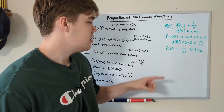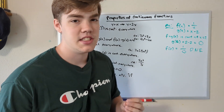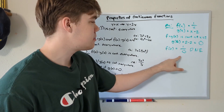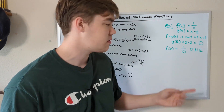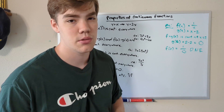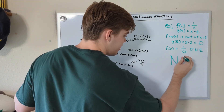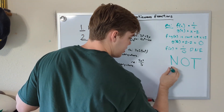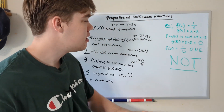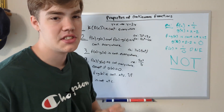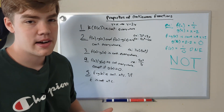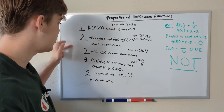Since we have 1/0, that means we have a discontinuity — the function does not exist at that point. Since f is not continuous at the point c (which was zero, i.e., g(2)), the entire function f(g(x)) is not continuous at x = 2. This last property is a little harder to wrap your head around, and it may take a little practice.